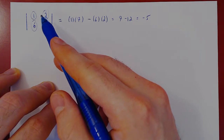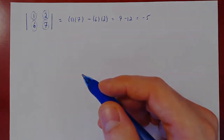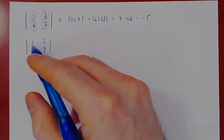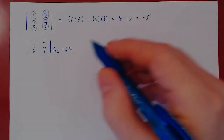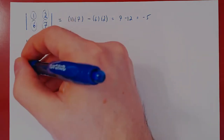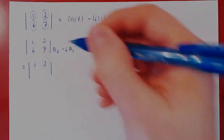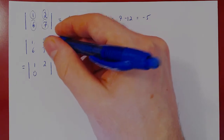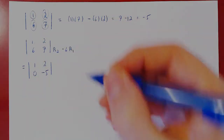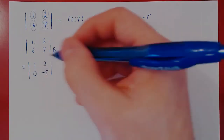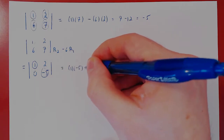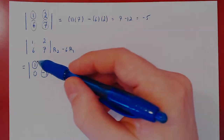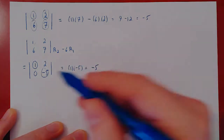Just for the fun of it, let's see if we had used a row operation to get a zero entry. Starting with the matrix 1, 2, 6, 7, we use this 1 to kill the 6 below by doing row 2 minus 6 row 1. We know this row operation will not change the determinant. Row 1 stays the same. We get 0 in row 2 column 1, and 7 minus 12 equals negative 5. Now we have an upper triangular matrix, and the determinant is the product of the diagonal entries: 1 times negative 5, which is negative 5.